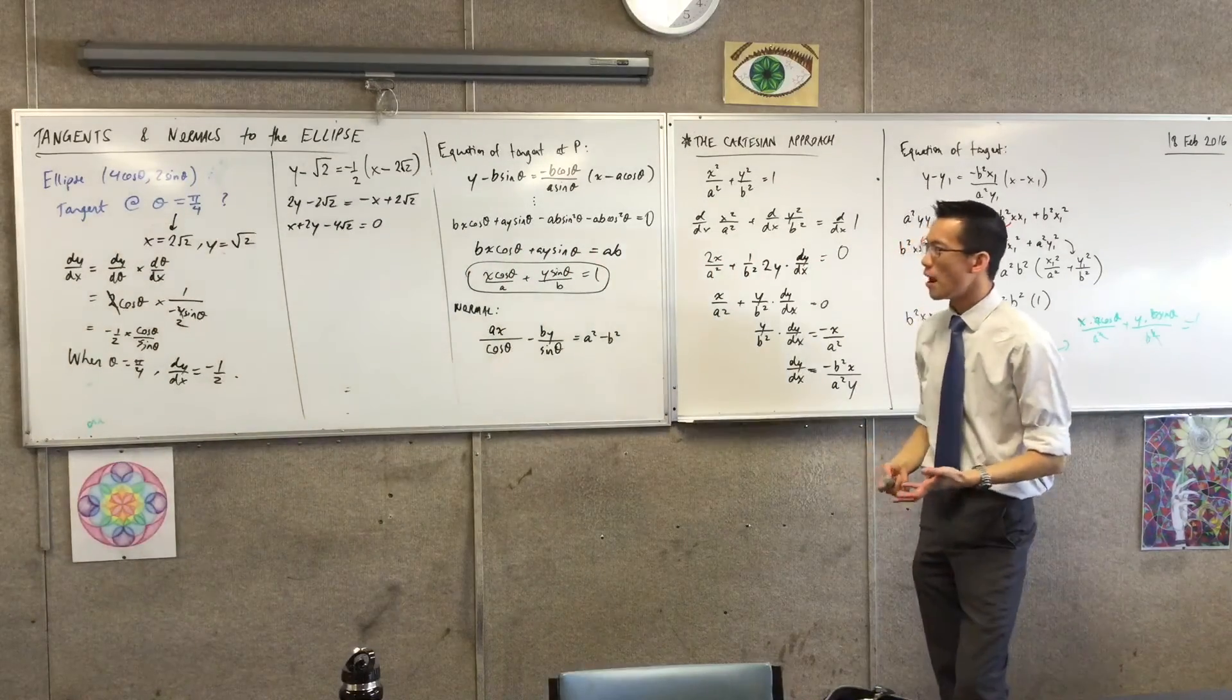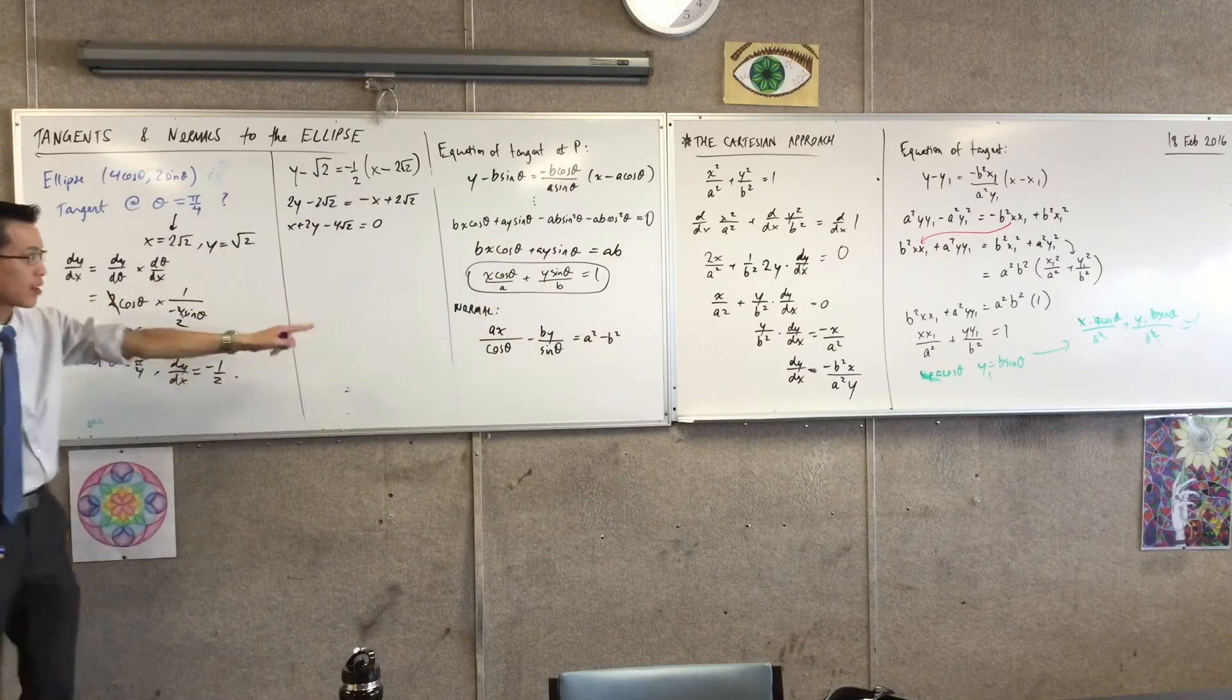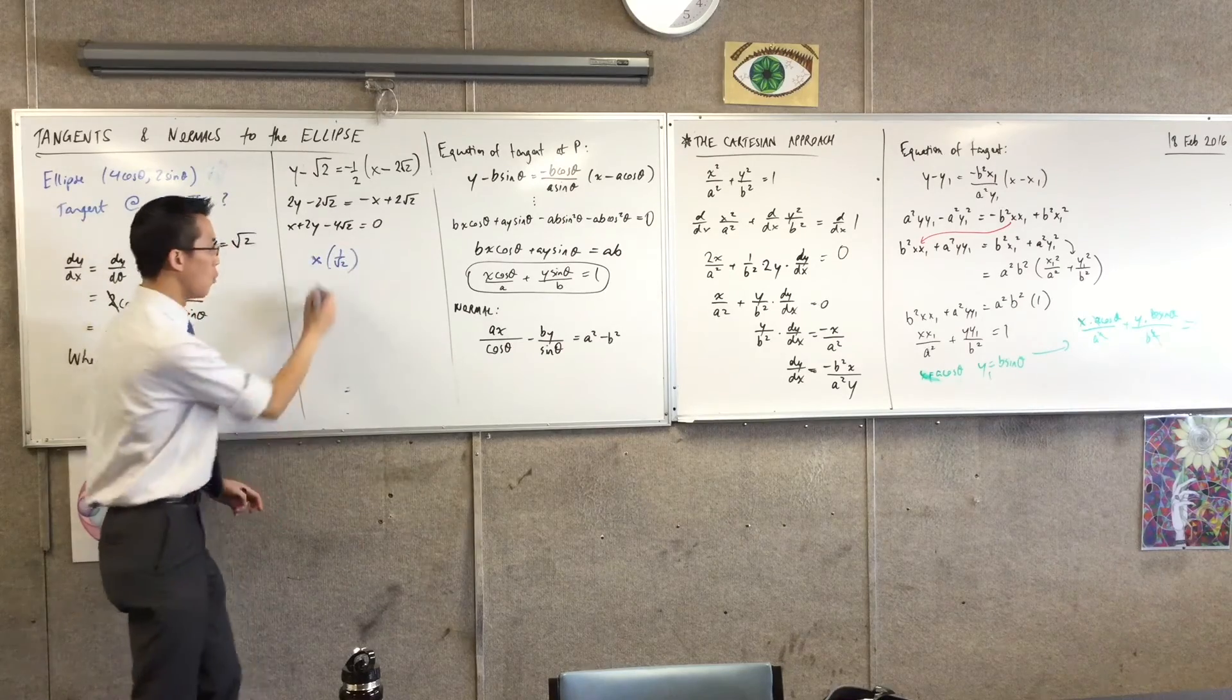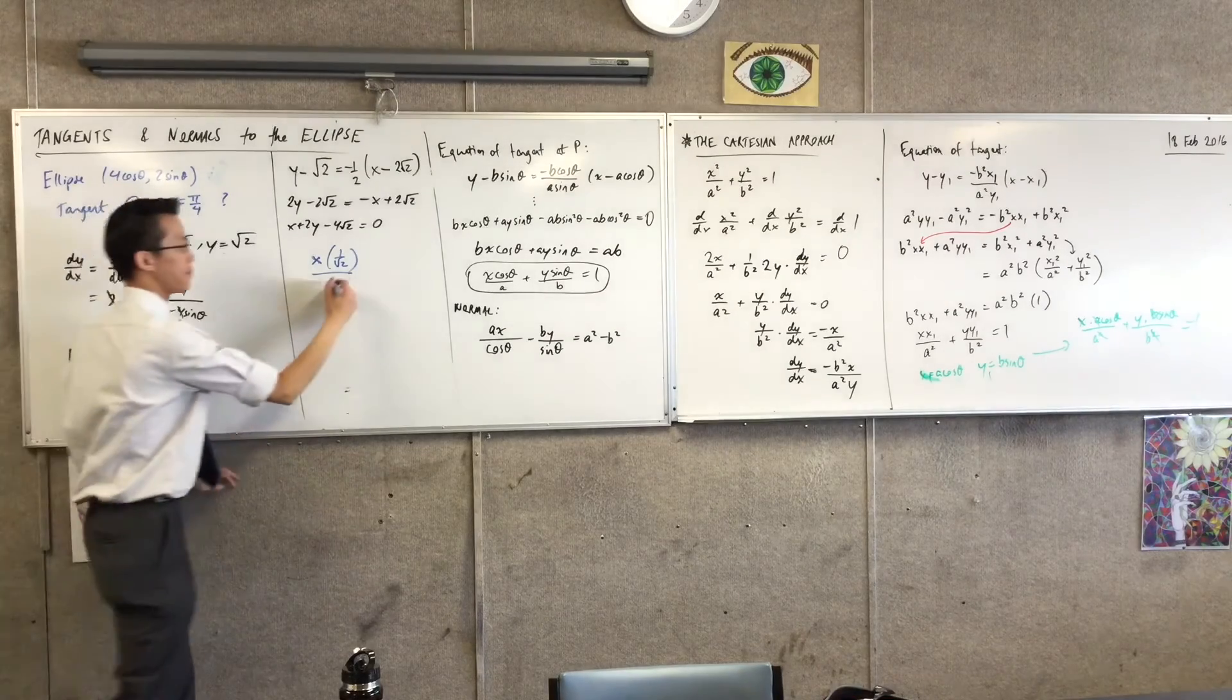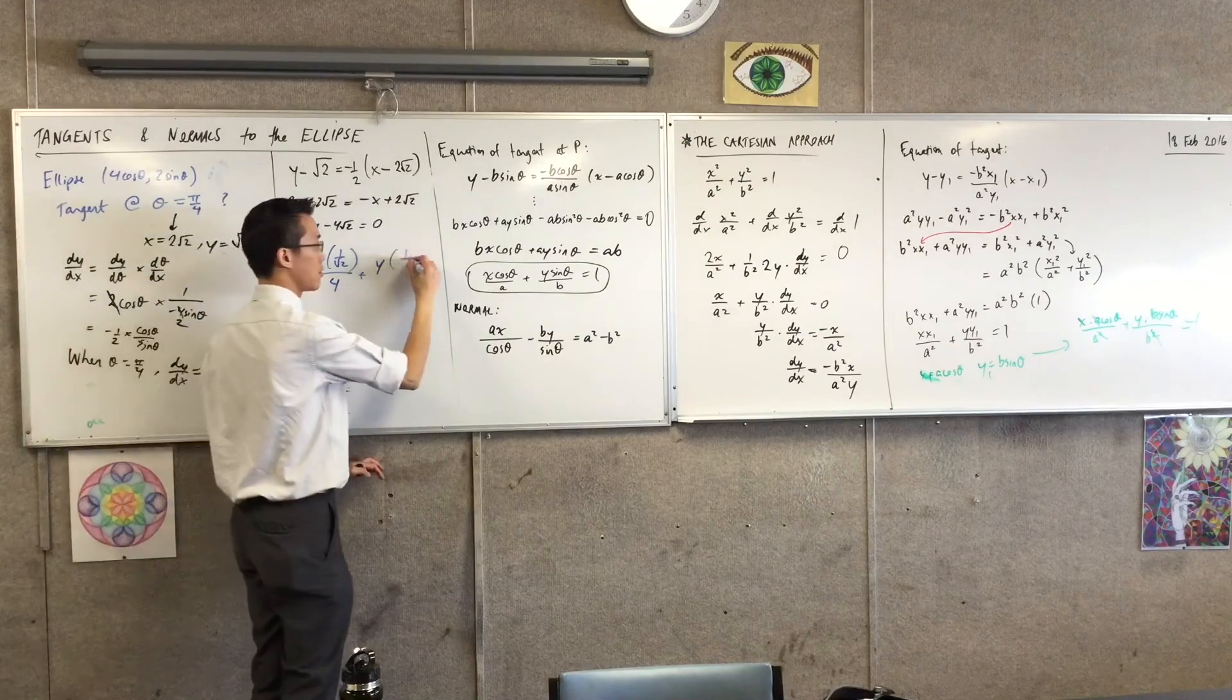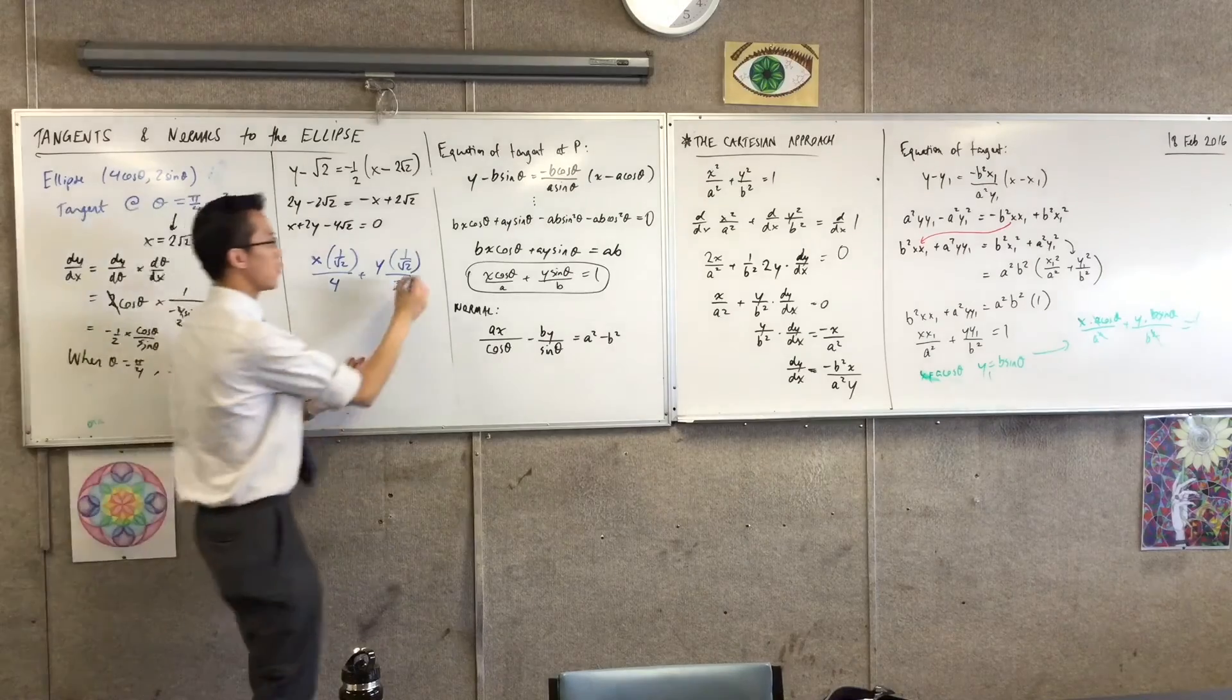Let's check it. Will it work? Let's confirm. x cos theta is x times 1 over root 2. What's a in this case? There it is. x plus y times cos theta, which is 1 over root 2 over 2. That all equals 1. What would you like me to multiply through by?